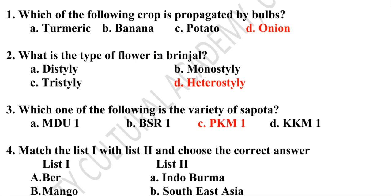First question: Which of the following crop is propagated by bulb? Turmeric, banana, potato, or onion? The correct answer is onion. Second question: What is the type of flower in brinjal? Heterostyly. Third question: Which one of the following is a variety of supporter — M2U1, BSR1, PKM1, or KKM1? The correct answer is PKM1.